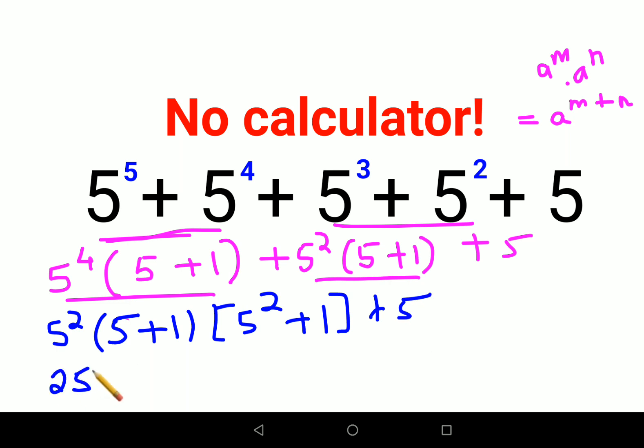So 5 squared is 25 times (5 plus 1) which is 6, and your 5 squared which is 25 plus 1 gets you 26 plus 5. So now, 25 times 6 gets you 150.